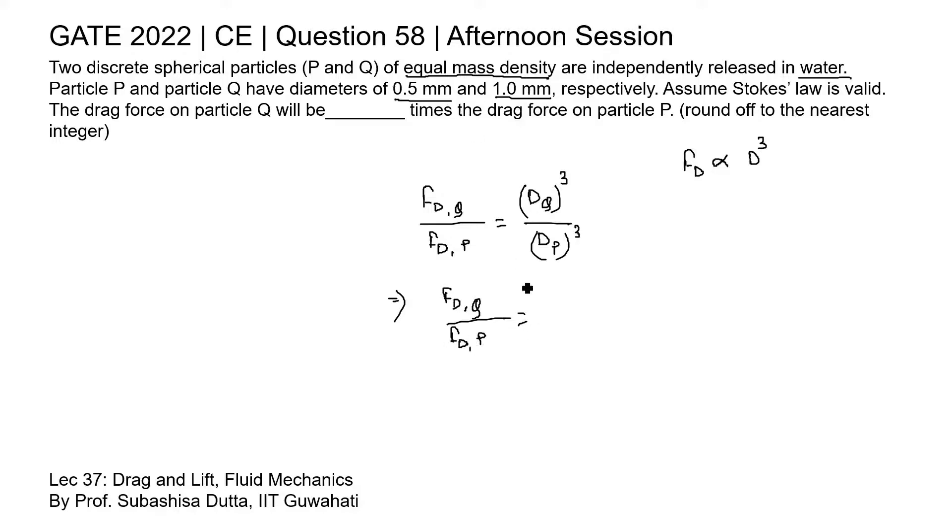diameter of Q is given 1 mm, so 1 cube, divided by diameter of particle P is given 0.5 mm, so 0.5 cube. So from here we can write the drag force on particle Q is equal to 8 times drag force on particle P. So from here we got the drag force on particle Q is equal to 8 times that of particle P. So the drag force on particle Q will be 8 times the drag force on particle P.